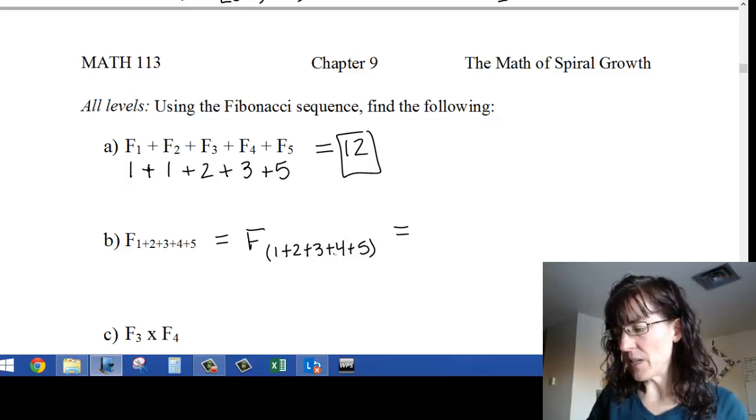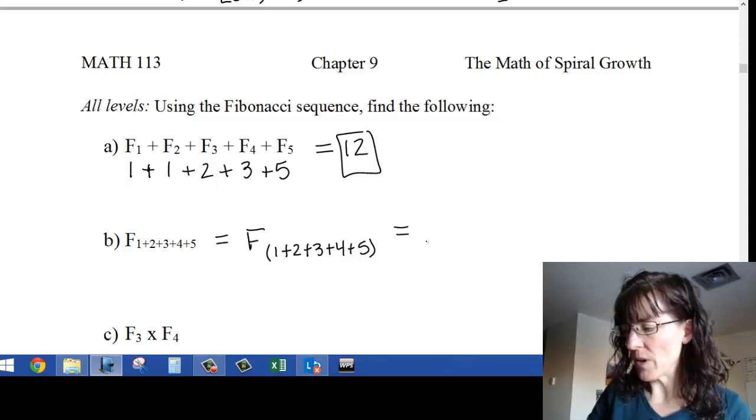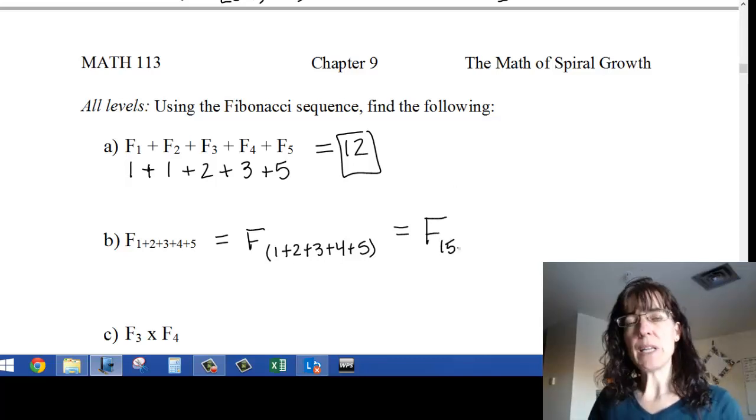So I add those: 5 plus 4 is 9, 10, 11, 12, 13, 14, 15, so I'm looking for F sub 15.